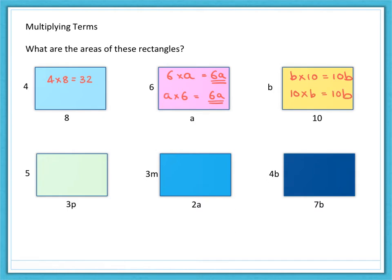Now, what about this pale green one? The area would be worked out by 5 lots of 3p. Now, that means a 3p, a 3p, a 3p, another 3p and one more 3p. So you have 5 lots of them. So if you combine those together, that's 15p. So it is as simple as 5 times the 3 lots of p.